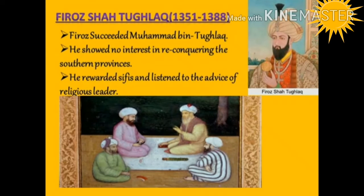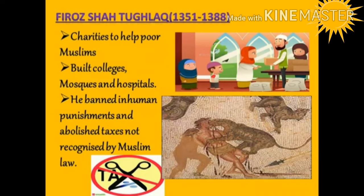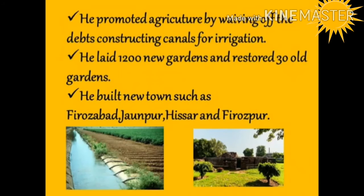Firoz Shah Tughluq, son of Ghiyasuddin's younger brother, succeeded Muhammad bin Tughluq. He showed no interest in reconquering the southern provinces and refused invitations from the Bahmani princes. He rewarded Sufis and religious leaders generously. He created charities for poor Muslims, built colleges, mosques and hospitals, banned inhuman punishments, and abolished taxes not sanctioned by Muslim law. He also promoted agriculture by waiving debts of agriculturalists, constructing canals for irrigation, and laid out 1,200 new gardens while restoring 30 old gardens of Alauddin Khalji.